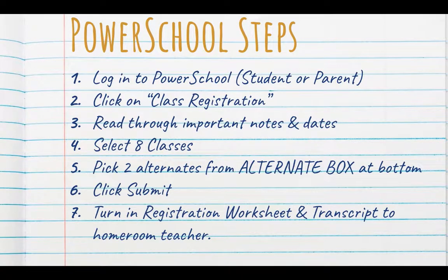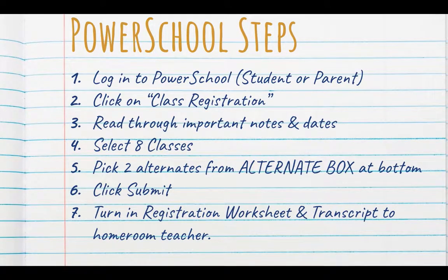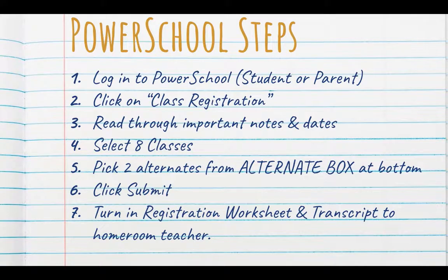Please take some time to read through the important notes and dates that we have listed on the screen. Step 4: you need to select eight classes. Step 5: you need to make sure that you choose alternates from the alternate box at the very bottom. This is a really important step — make sure that you pick them from the alternate box. If you choose them from one of the elective boxes, it's going to put it in as one of your extra course requests.